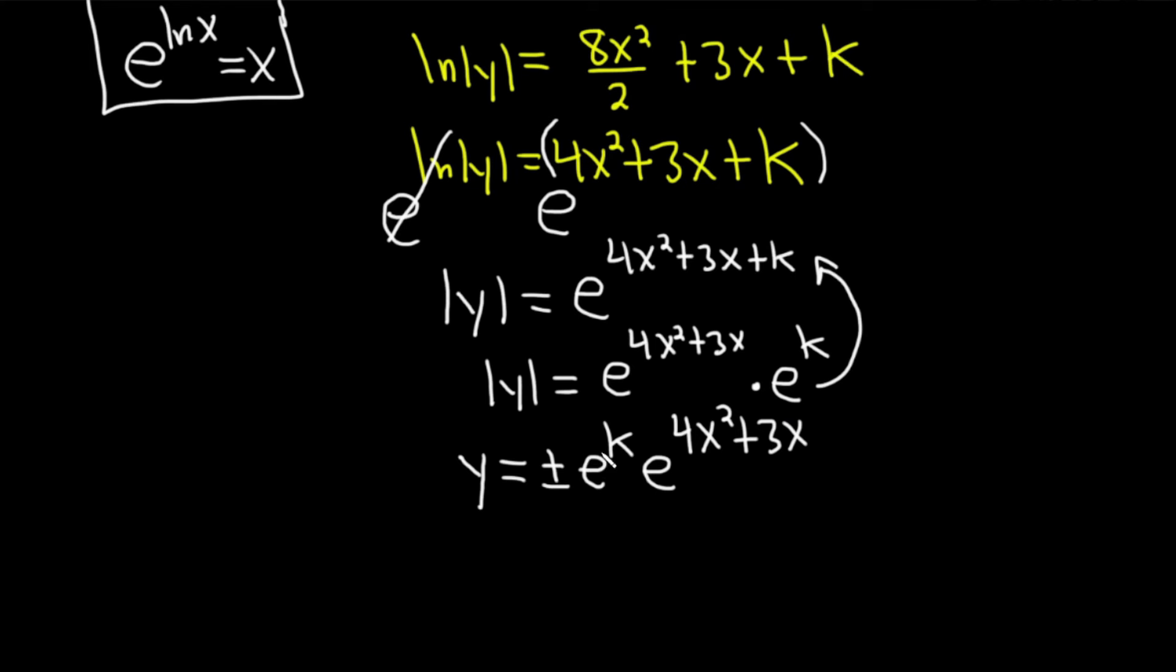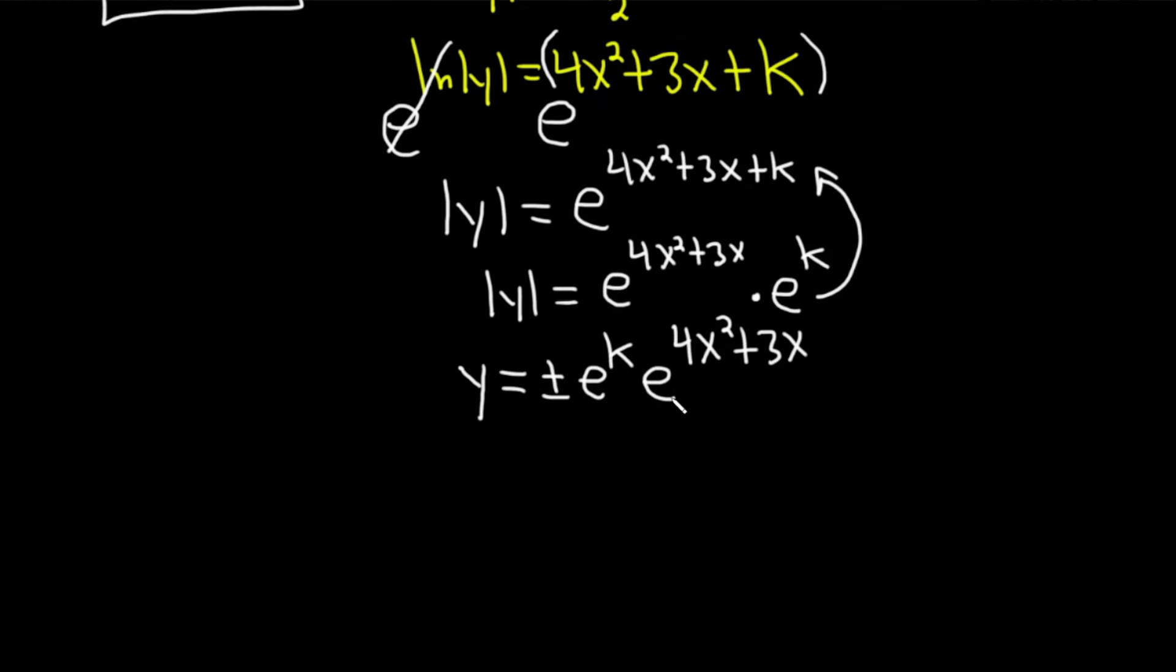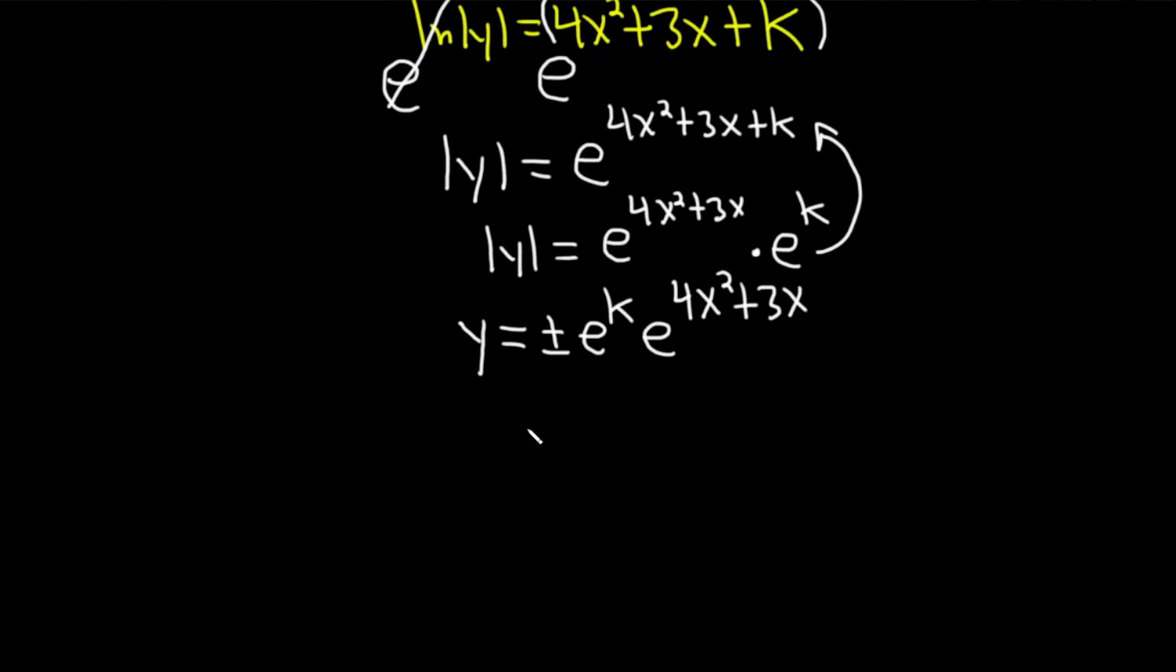There's a lot of steps here. A lot of times, if you look in books, they don't have these steps. Some books do. Some books on differential equations do all these little steps. It's worth seeing it. Now what I'm going to do is I'm going to replace the plus or minus e to the k with another constant. I'm going to call it c.